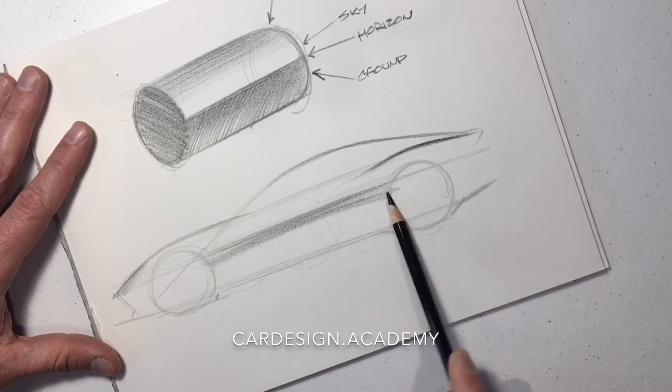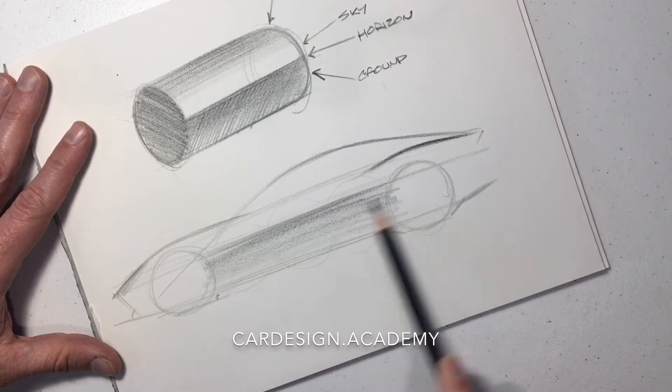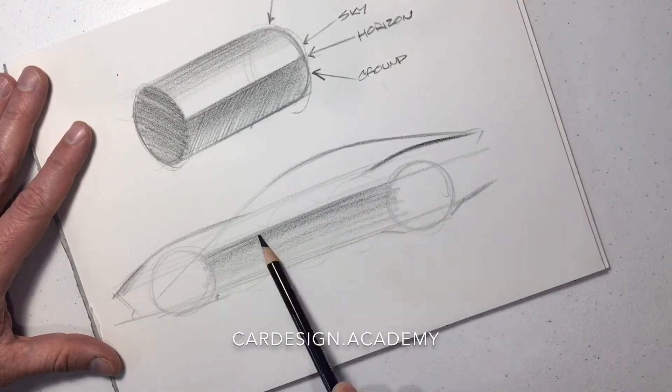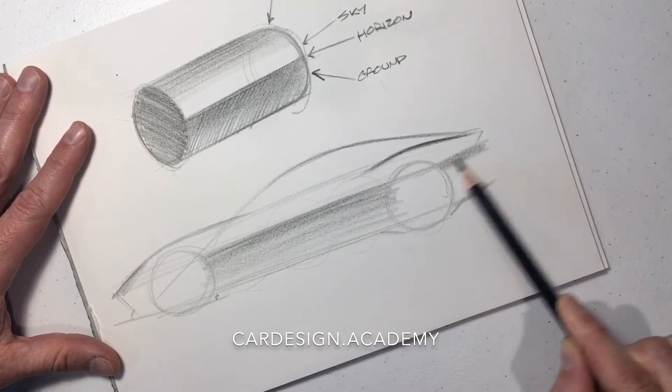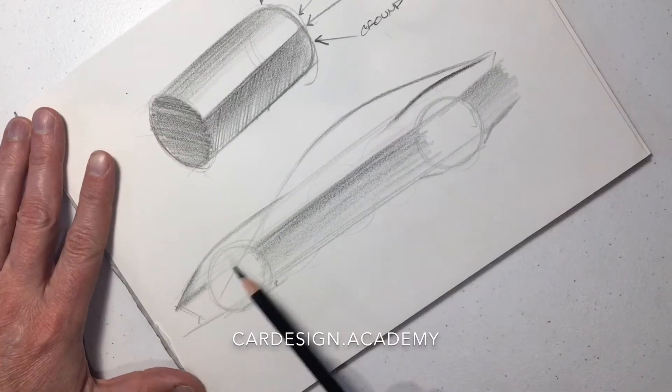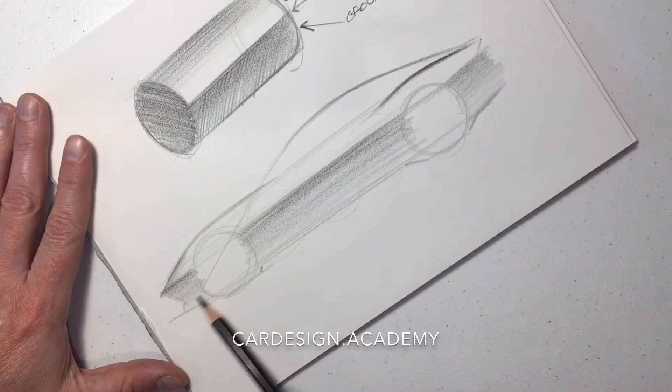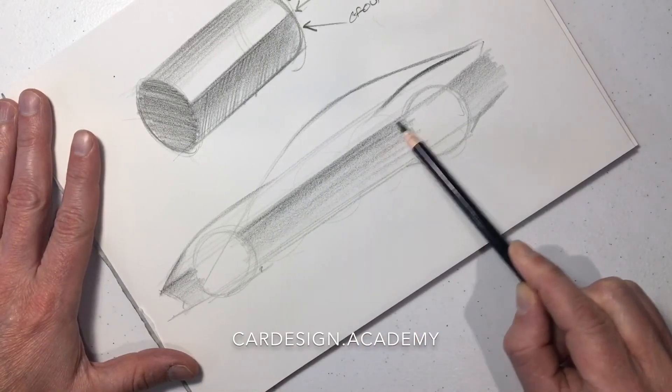We're going to start to darken the bottom half of that body side, the darkest point just at the horizon, then transitioning to a slightly lighter shade of gray where the ground is closest to the vehicle.